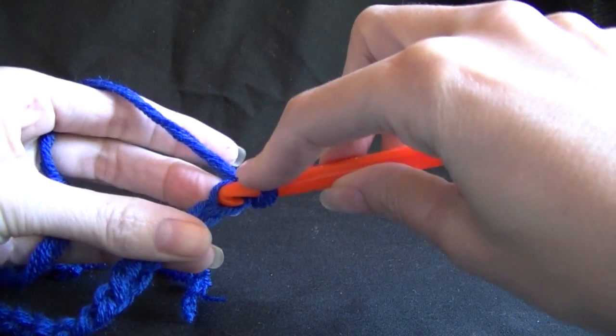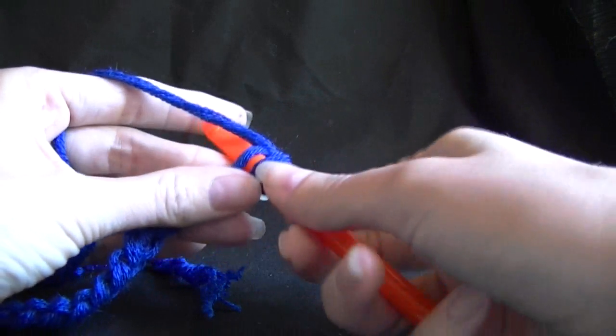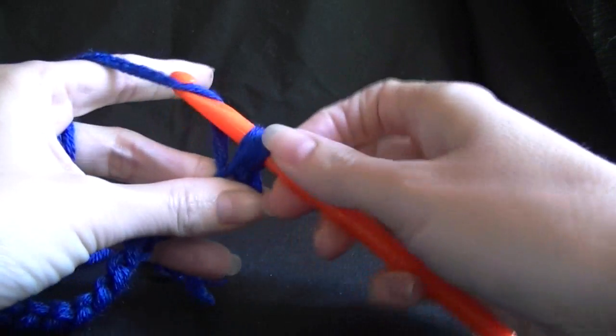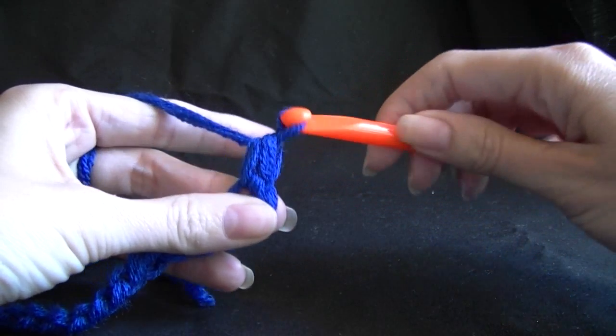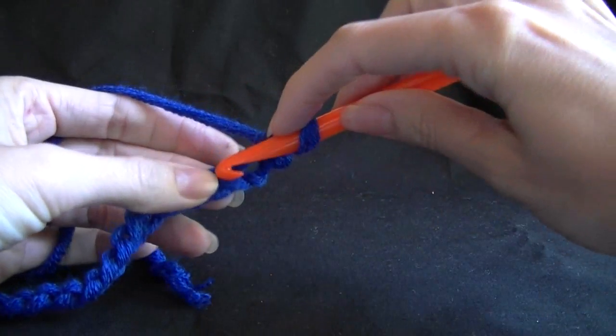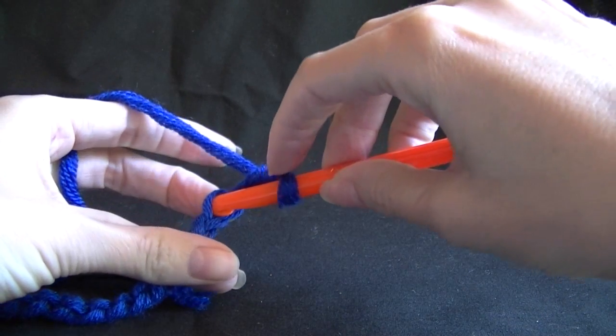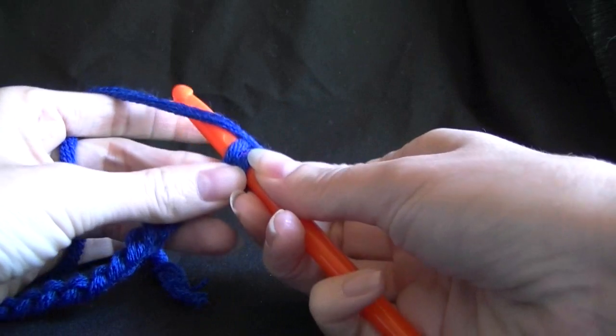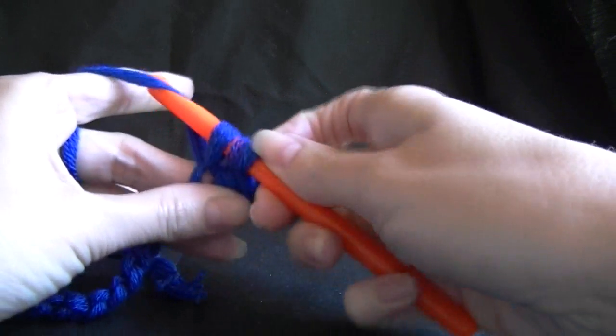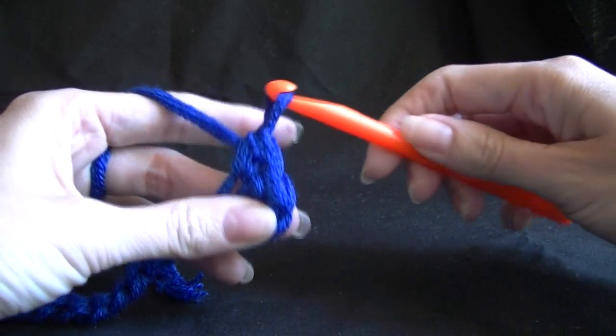So putting our hook into the chain, yarn over, pulling up a loop. We have 2 loops on our hook, yarn over and pulling through 2, that's our first stitch made. We want to do this in every chain across. So into our chain, yarn over, pulling up a loop. We've got 2 on our hook, yarn over, pulling through 2.